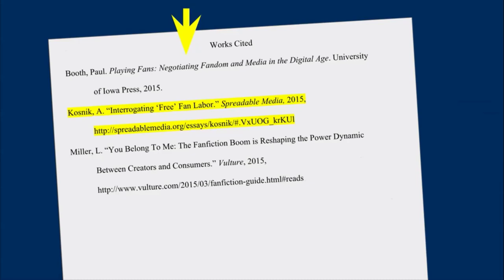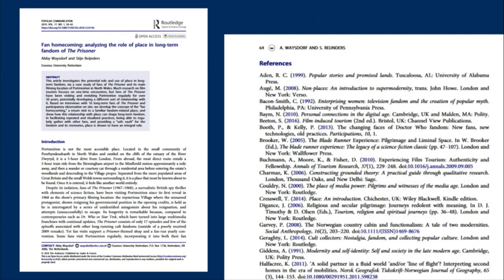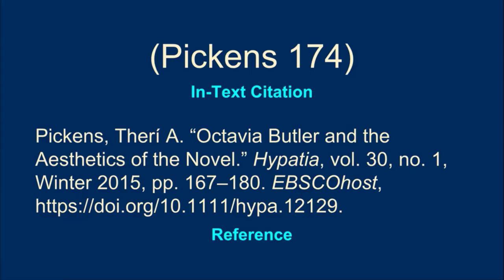Your works cited page serves as a list of all of the sources that you have used in your paper and shows that you have given proper credit to these sources. When you write a paper and create a works cited page, you become part of the scholarly conversation, and citing your sources shows how your work fits within that conversation. This is also why all credible academic sources cite their sources.